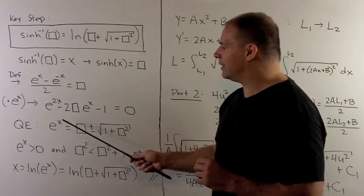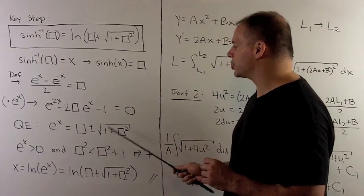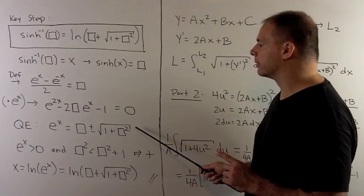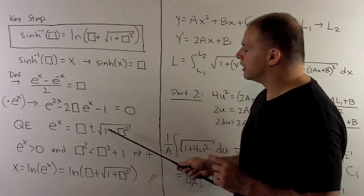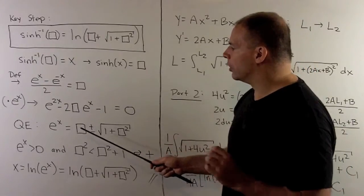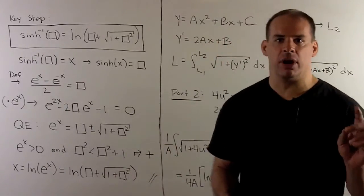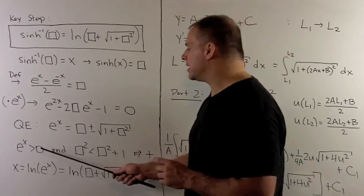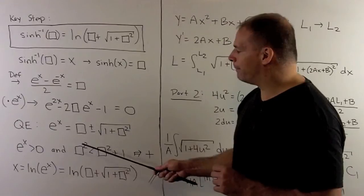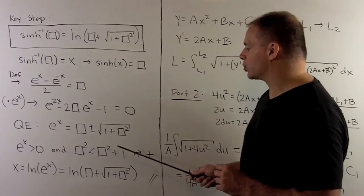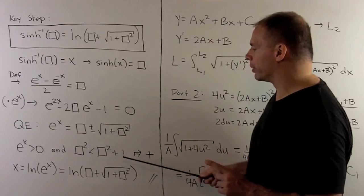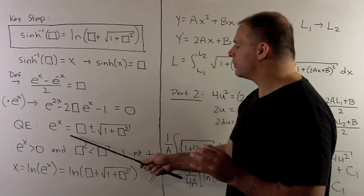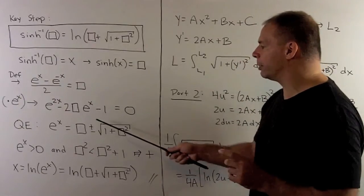The result, e to the x is equal to box plus or minus square root of 1 plus box squared. Now, to decide which one we go with, note that e to the x is always a positive number for any x. Because of this, and the fact that box squared is strictly less than box squared plus 1, we can square root both sides. To get this to be a positive number, I have to go with the plus sign.